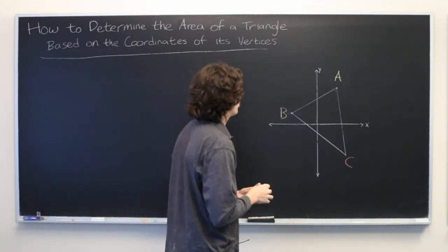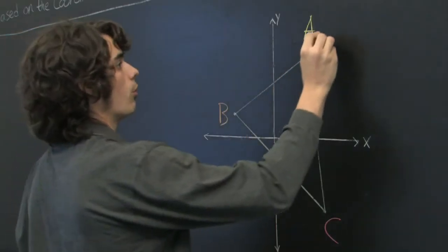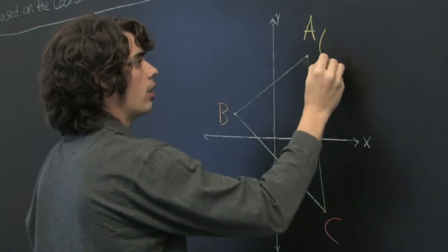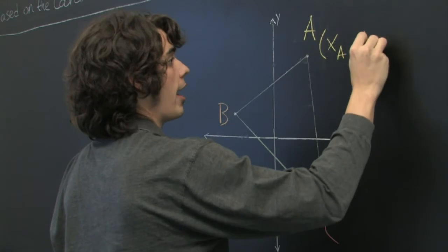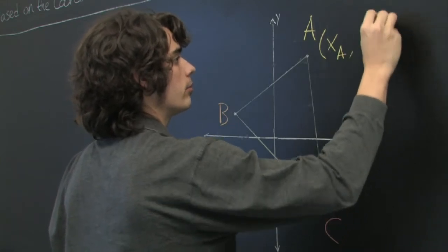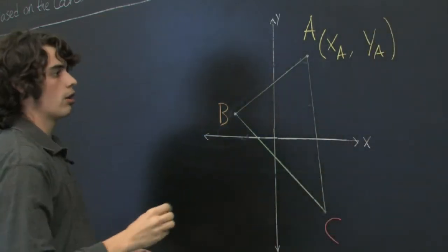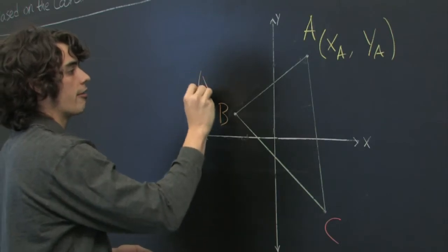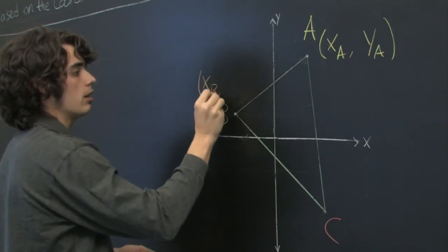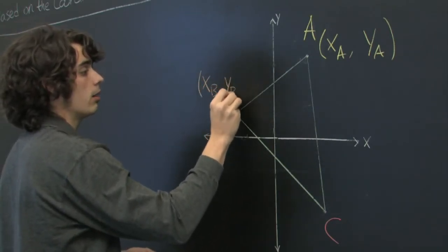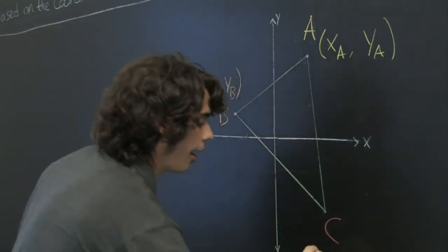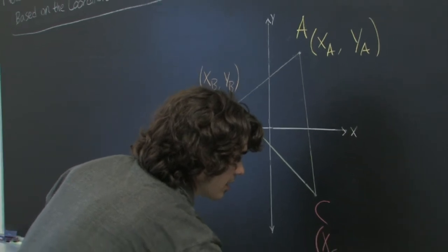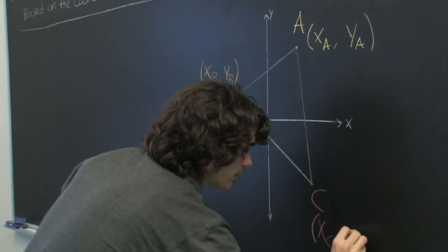Now, of course, each point has two different coordinates associated with it. So this one will have XA and YA. This one over here will have XB and YB. And then finally, we have XC and YC.